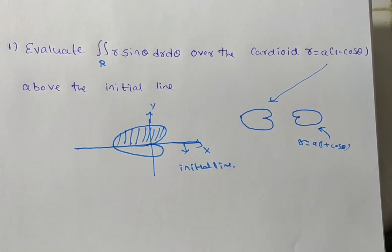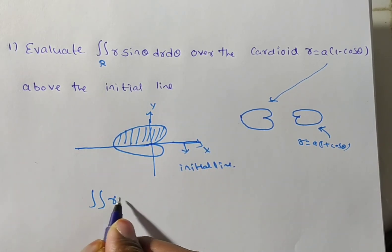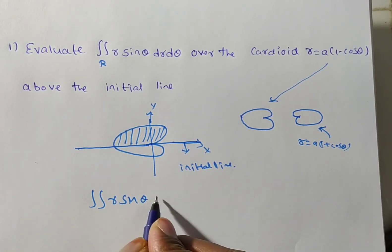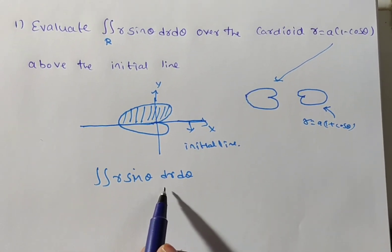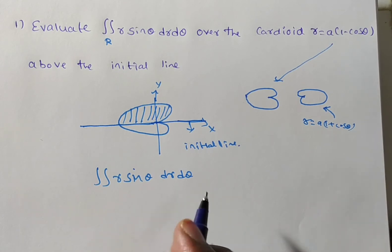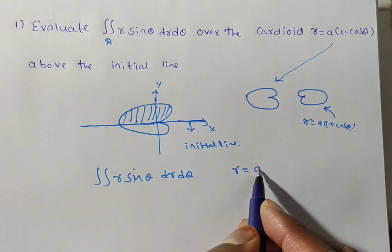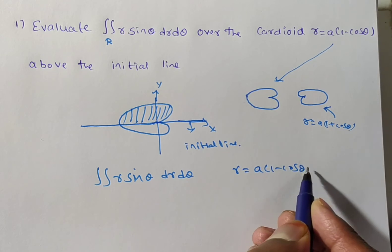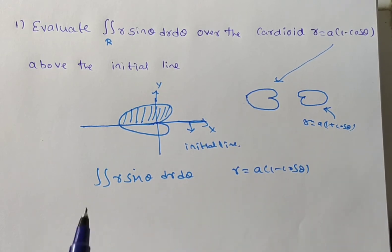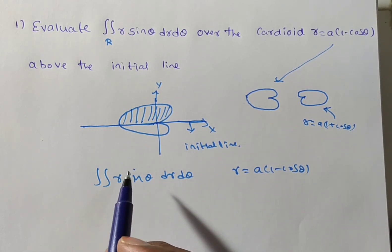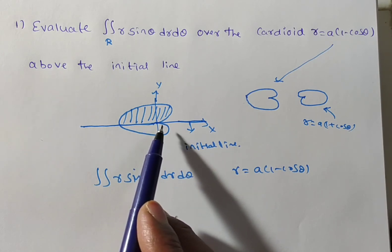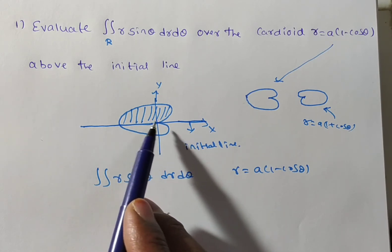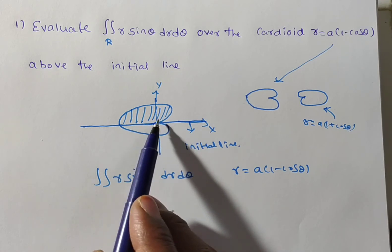Now, what are the limits? The given problem is the double integral of r sin θ dr dθ. We need to integrate with respect to r and θ. The given cardioid is r = a(1 - cos θ). Observe this graph — the shaded region is obtained in two quadrants.